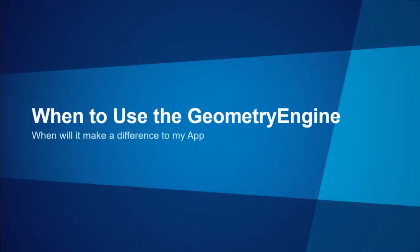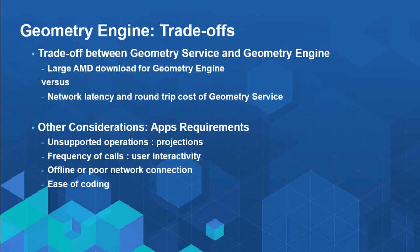A common question is when should you use the geometry engine. The answer is not always — it's really all about trade-offs. The geometry engine is a large module of code you're bringing down to your browser. If you're only going to call it once, you might as well use the geometry service. It doesn't support projections, and if you need lots of projection support, carry on using the geometry service. But if you need that interactivity and high frequency of calls, it's a great route to a good user experience. Another reason is network connection — if you're working offline or with a poor connection, user experience is hugely improved. And the ease of coding is much simpler.